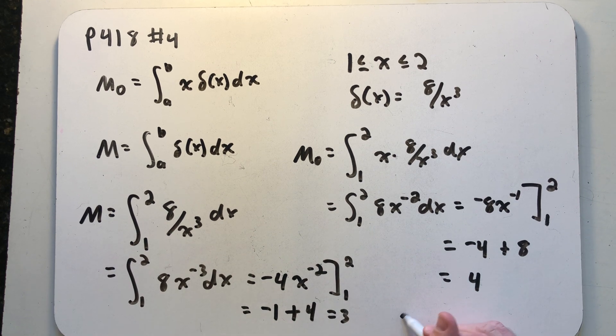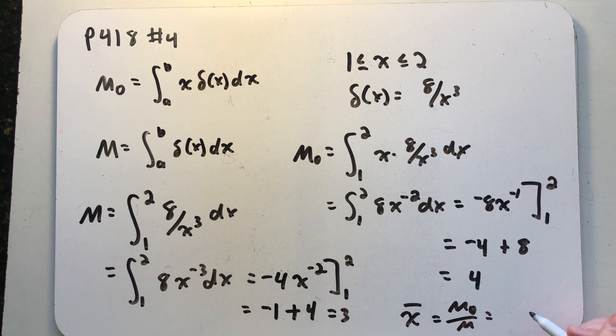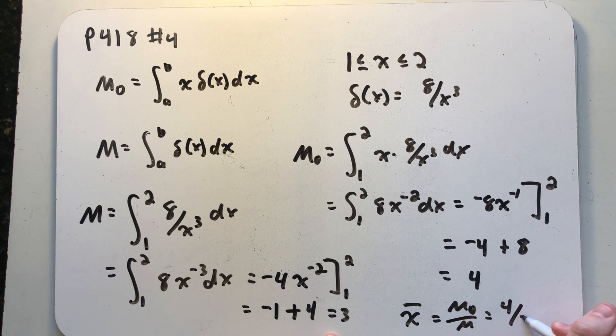All right, well our center of mass x bar is m naught divided by the total mass. So here we have 4 over 3.